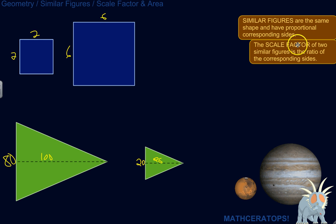So the scale factor of two similar figures is the ratio of the corresponding sides, so the sides that match up with each other. So let's look at it, let's find out the scale factor of these two squares. So the ratio of the corresponding sides, so this side and this side correspond, they match up. So the ratio is then 2 to 6, which we can reduce to 1 third.